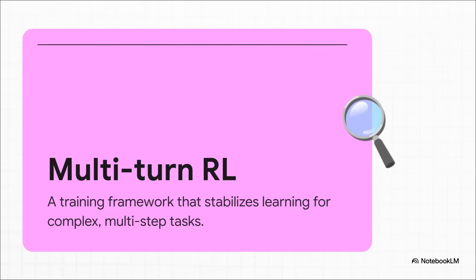Now, to deal with that unstable learning problem we talked about, the team built a clever framework called multi-turn reinforcement learning. It's designed to make that whole trial and error process way more stable, especially for those really long tasks. Basically, it works by breaking down a huge goal into smaller, bite-sized steps. Then, it rewards the AI for making progress on each little step. This is brilliant because it keeps the agent on track and stops it from getting lost or just giving up when a task gets tough.